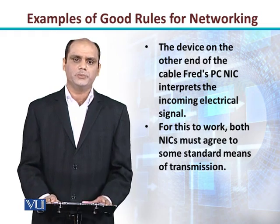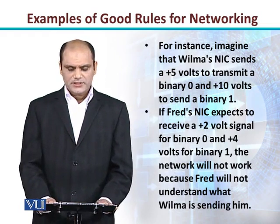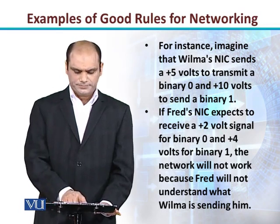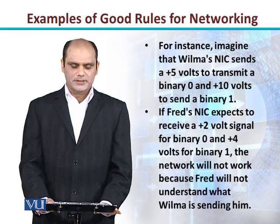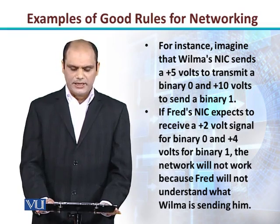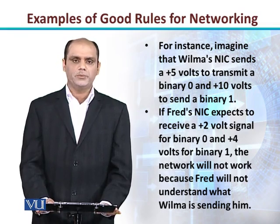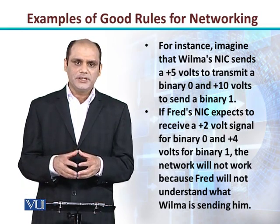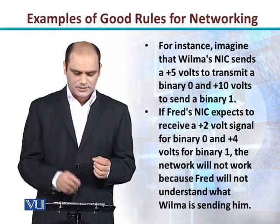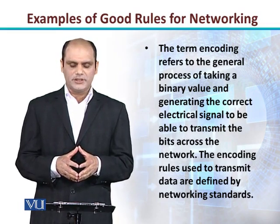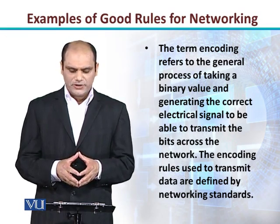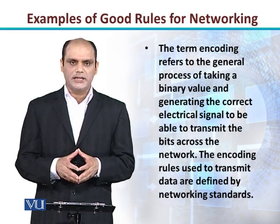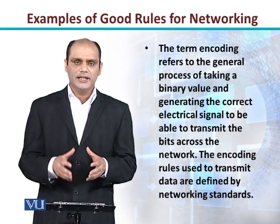This is the first example of a networking rule. For instance, imagine Wilma's NIC sends plus 5 volts to represent binary 0 and plus 10 volts for binary 1, but Fred's NIC expects plus 2 volts for binary 0 and plus 4 volts for binary 1 — the network will not work because Fred will not understand what Wilma is sending. Both the sender and receiver must agree upon the rule. Encoding is the process of taking a binary value and generating the correct electrical signal to transmit bits across the network. The encoding rules used to transmit data are defined by networking standards.